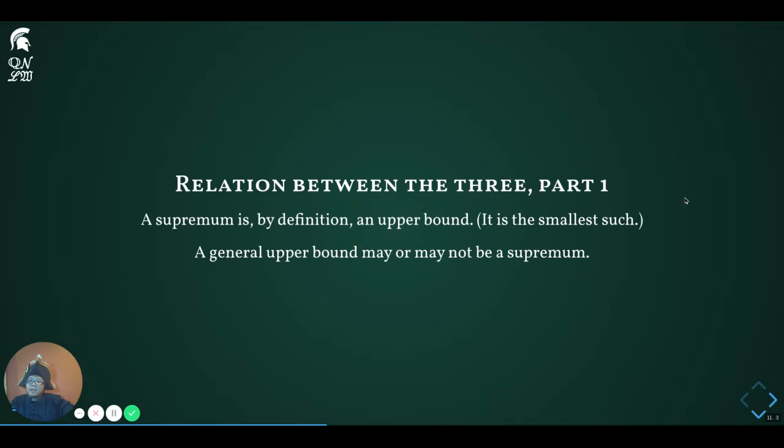Now let's look at the basic relationships between the three concepts. By definition, a supremum is a special kind of upper bound. So in the Venn diagram of these three things, you see that a supremum can be included as one of the upper bounds. In contrast, a general upper bound is not a supremum — if it were, there would be no need to isolate the concept of supremum as a special one.